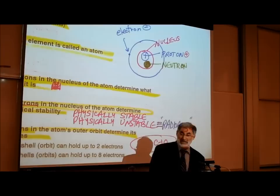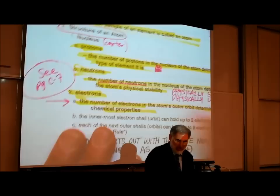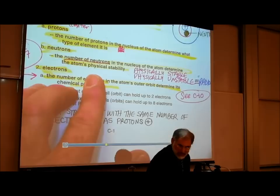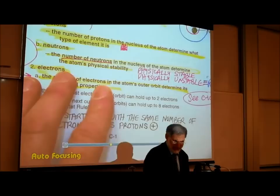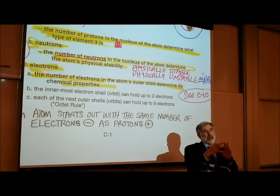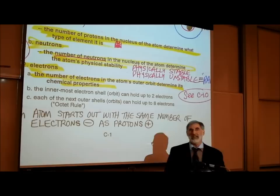What do neutrons do? The number of neutrons in the nucleus of an atom determines the atom's physical stability. How many neutrons are located in the nucleus of an atom can affect the physical stability of that atom.